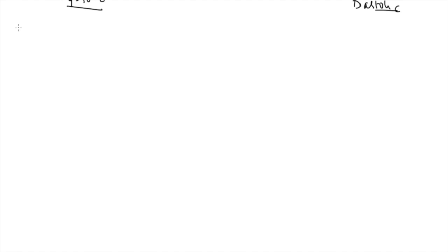Murmurs are classified as systolic murmurs and diastolic murmurs, with further subdivisions into early, mid, and late. It's best to first understand the concepts and then list examples under each category. Let's take specific conditions and work through them.